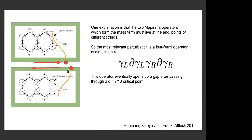The Majoranas live at the endpoints of Wilson lines. We can't write a bilinear of a Majorana at one edge and a Majorana at the other edge because one string goes into the top half of the system and the other goes into the bottom half, and they can't cross without making more Majoranas at the endpoints. So the smallest operator you can make out of the Majoranas has four of them, and the most relevant perturbation is this four-Fermi operator of dimension four. This was studied by another group who found that with a large enough perturbation, this perturbation eventually gaps out the domain wall and passes through a C equals seven-tenths critical point along the way.